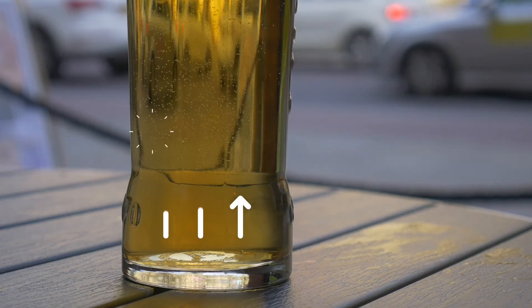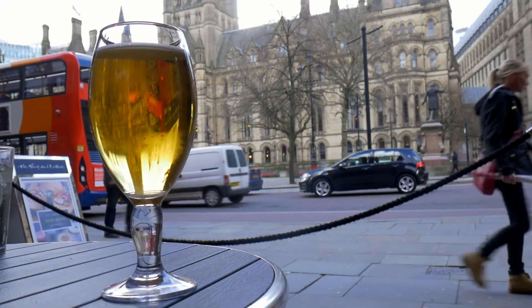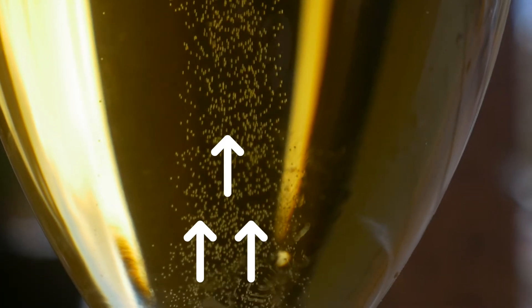A wide glass will send bubbles up evenly. A curved glass will send a thin strip of bubbles towards the center.